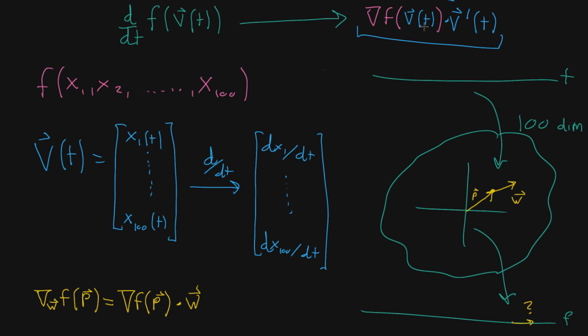But that looks a lot like the multivariable chain rule up here, except instead of w, you're taking the derivative, the vector value derivative of v. So this whole thing, you could say, is the directional derivative in the direction of the derivative of v of t, that's kind of confusing, directional derivative in the direction of a derivative of f, and at what point are you taking this?